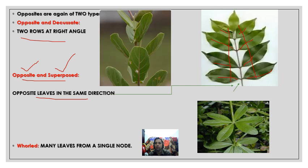In the other case, this is called opposite and decussate. Here you can see this leaf and this leaf are present in one direction, and then the next pair of leaves is at a right angle to them. Again the next pair is at a right angle to those two leaves. When two leaves are present on one node but at right angles to one another, this is called opposite and decussate.